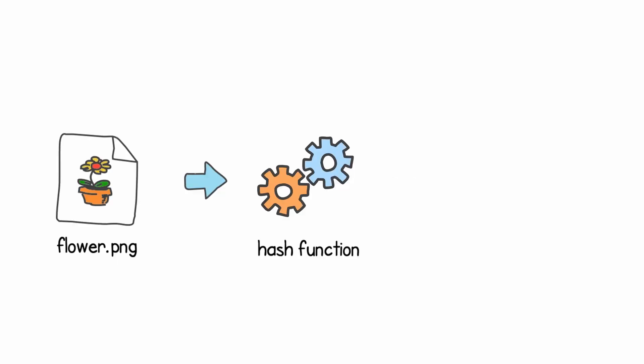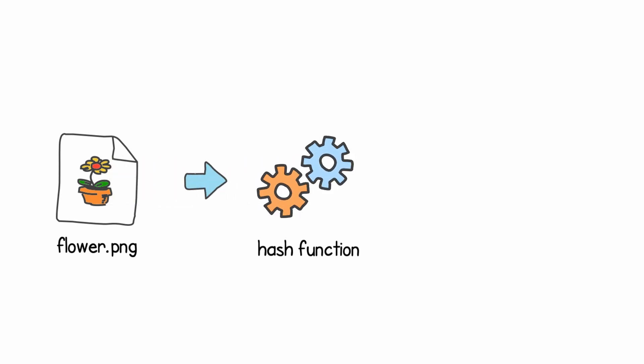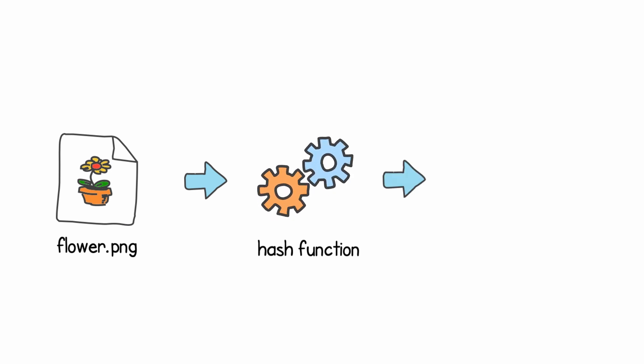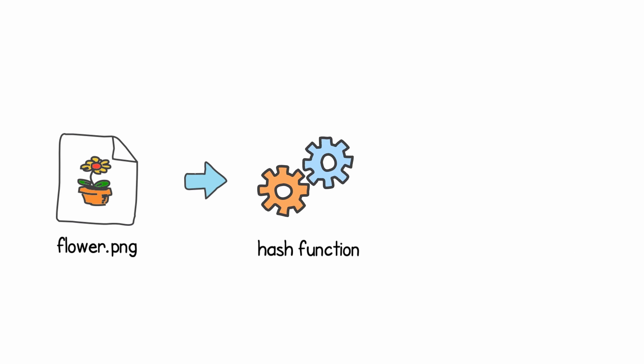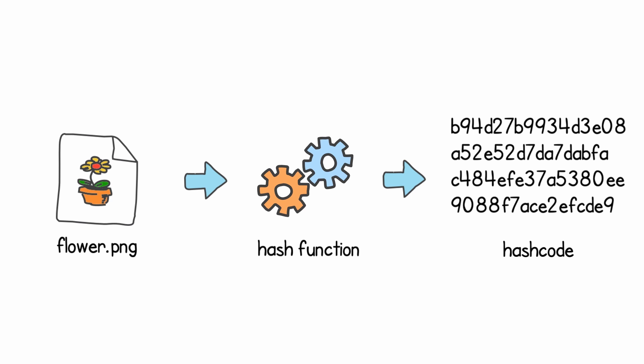Hash functions have this property that when you give the hash function an input — and this can be anything like a file, an image, or a text as we saw before — this hash function gives us back a fixed-length code for that input. Think about this hash code as being kind of a summary of the object you used as input. If you give that same object back into the hash function, it will always return the same output, and the length of this hash code for that hash function will always be the same.